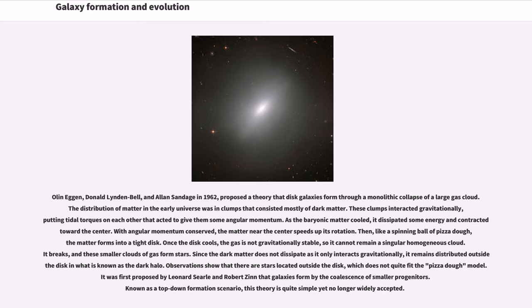Since the dark matter does not dissipate as it only interacts gravitationally, it remains distributed outside the disk in what is known as the dark halo. Observations show that there are stars located outside the disk, which does not quite fit the pizza dough model. It was first proposed by Leonard Searle and Robert Zinn that galaxies formed by the coalescence of smaller progenitors. Known as a top-down formation scenario, this theory is quite simple yet no longer widely accepted.